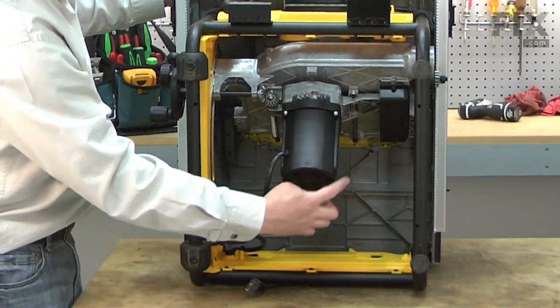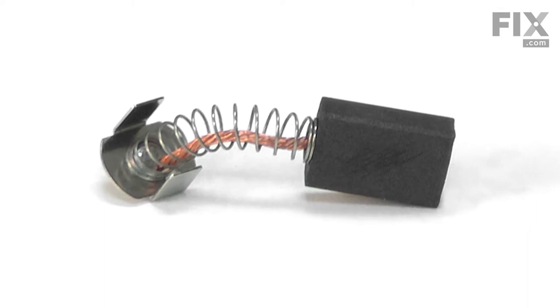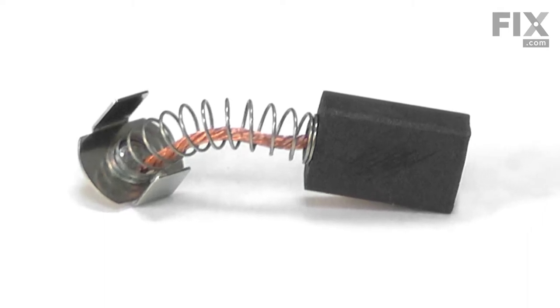There are two motor brushes in your saw's motor. The brushes are made of carbon and have a lead wire and spring attached to them. The brush conducts electricity to the armature through the commutator.